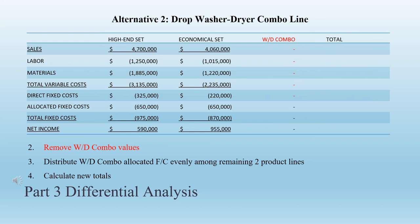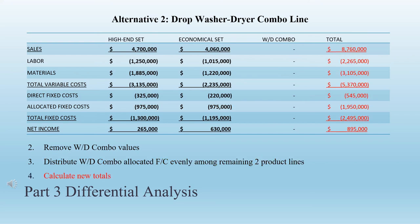Step 2: on a new table, remove the washer-dryer combination values. Step 3: distribute the washer-dryer combo allocated fixed costs of $650,000 evenly among the remaining two product lines — $325,000 each to the high-end and economical sets — for total allocated fixed costs of $975,000 on both lines. Step 4: calculate the new totals. Sales: $8,760,000. Labor: $2,265,000. Materials: $3,105,000. Total variable costs: $5,370,000. Direct fixed costs: $545,000. Allocated fixed costs: $1,950,000. Total fixed costs: $2,495,000. The total net income for both lines under alternative two (drop the washer-dryer combo) is $895,000.